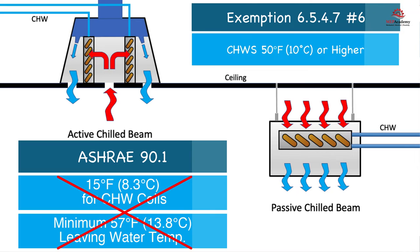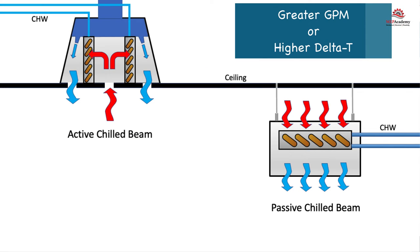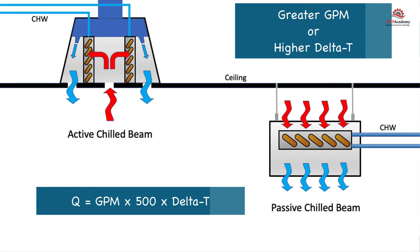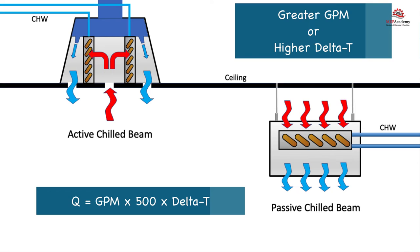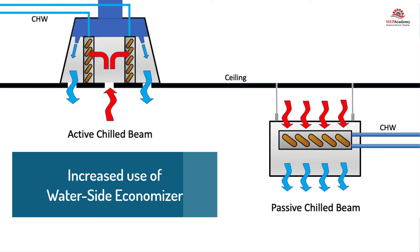In order to achieve a larger capacity chilled beam, you need either greater water flow or a higher delta T, as the equation is Q = GPM × 500 × delta T. By increasing flow or the delta T, you can increase the capacity. However, chilled beams are limited by their size and the temperature at which chilled water can be delivered to avoid condensation. With an increase in chilled water supply temperature, there will be an increase in the duration for which a waterside economizer could be used.